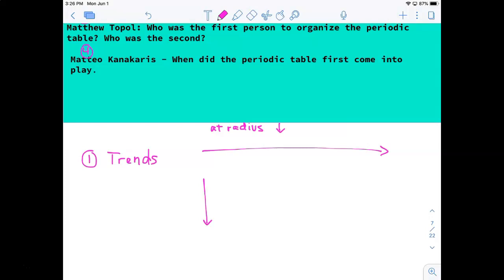So that means that the ionization energy and the electronegativity, they both go up. So ionization and electronegativity do the opposite of the radius. If you can just remember one of these things.